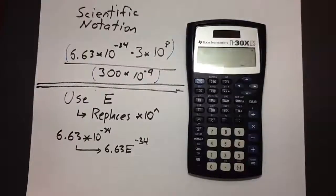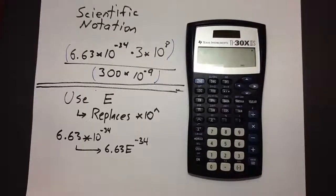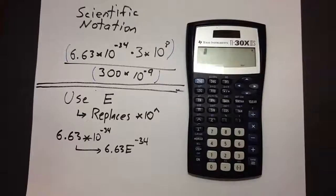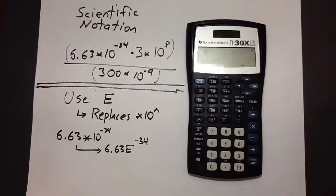Welcome to our video about scientific notation and entering it into the calculator. We're going to show you how to handle a tricky-looking scientific notation problem and place it in the calculator correctly. Our problem is 6.63 times 10 to the negative 34th power times 3 times 10 to the 8th power, all divided by 300 times 10 to the negative 9th power. Most TI calculators have a function that allows you to enter scientific notation more easily.